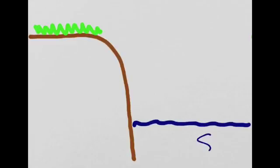We have the sea out here. We have the land here. The brown line represents the cliff. The green line represents some vegetation growing on the top of the cliff.